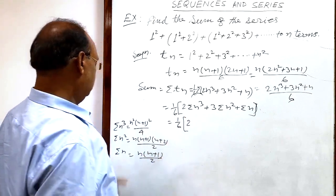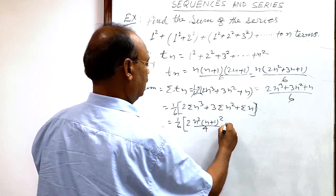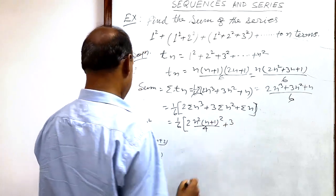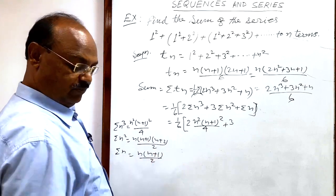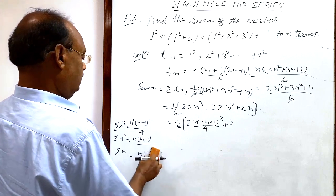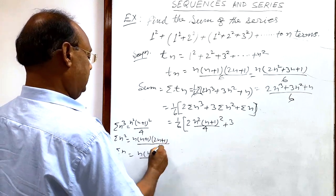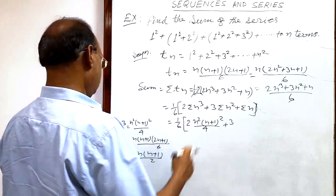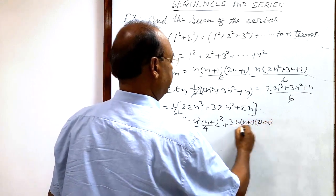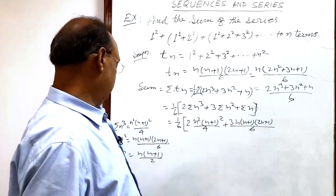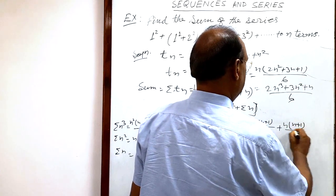Substituting the formulas: this is (1/6) times [2 · n²(n+1)²/4 + 3 · n(n+1)(2n+1)/6 + n(n+1)/2]. The next term is 3 times sigma n², which is n(n+1)(2n+1)/6, and the last term is sigma n = n(n+1)/2.